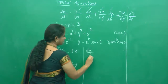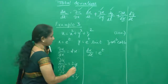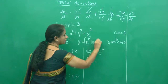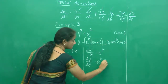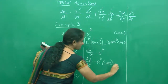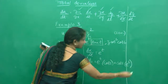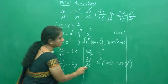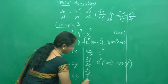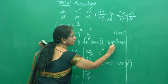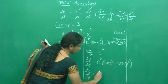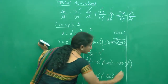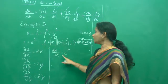dx by dt is very simple because the derivative of e power t is e power t. So what is dy by dt? There is a product rule here: e power t times sine t. So keep e power t as it is, sine t derivative is cos t, plus keep cos t as it is, derivative of e power t is e power t. Now for dz by dt — same thing, product rule. e power t into cos t: start with e power t, cos t derivative is negative sine t, plus keep cos t as it is.